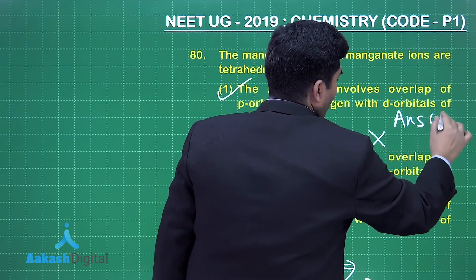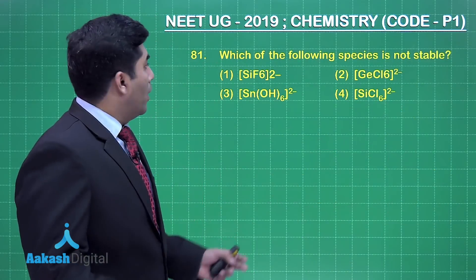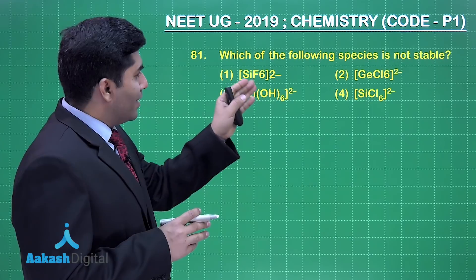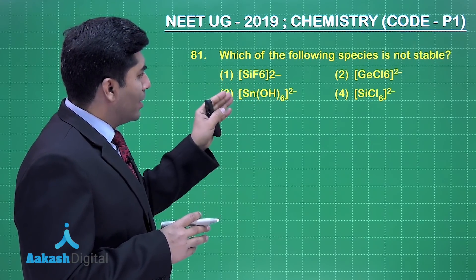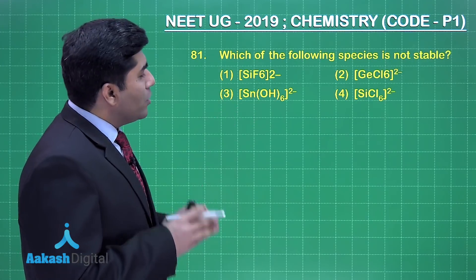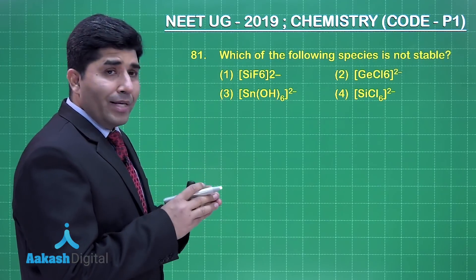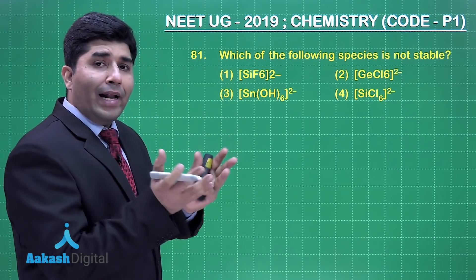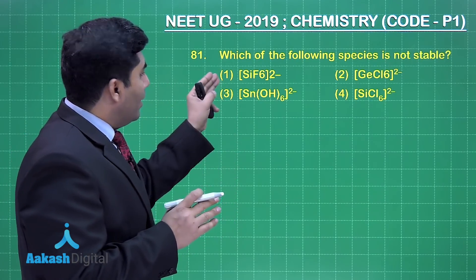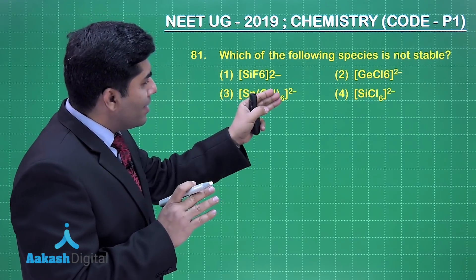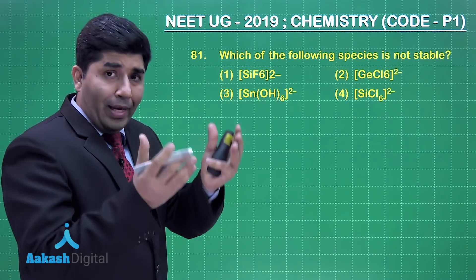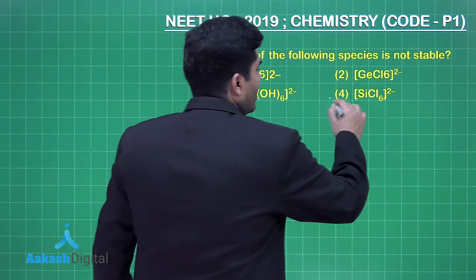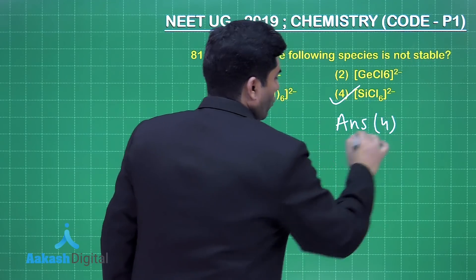The next question asks which species is not stable among SiF6 2 minus, GeCl6 2 minus, SnOH6 2 minus, and SiCl6 2 minus. The last one, SiCl6 2 minus, is not stable because silicon is small in size and chloride is bigger than fluoride. Six fluoride ions can surround the Si4+ ion in SiF6 2 minus, but six Cl minus ions cannot surround silicon because they are too large. So the answer is option four.